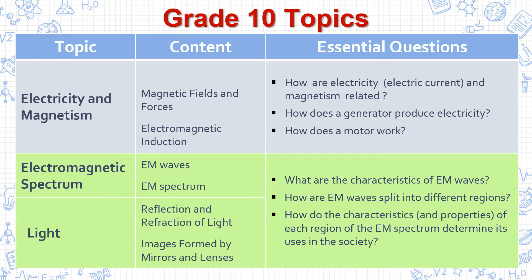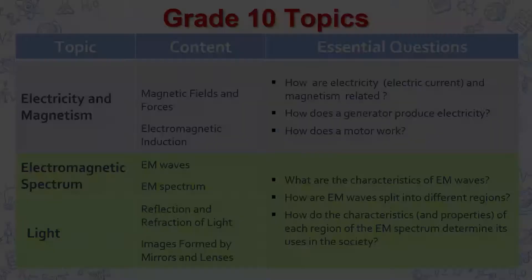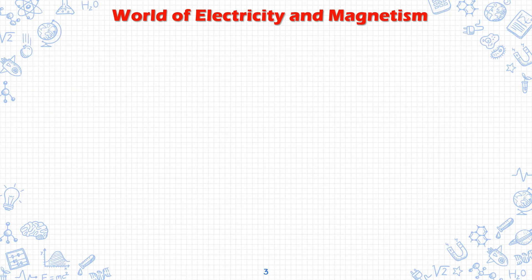Electricity and magnetism has the following contents: magnetic fields and forces, and electromagnetic induction. The essential questions for these specific topics are: How are electricity and magnetism related? How does a generator produce electricity? And how does a motor work? For us to have a strong grasp of our present topic, let us explore the world of electricity and magnetism.